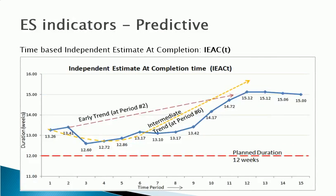One of the benefits of using ES is the ability to predict project completion time more accurately. We can calculate the time-based Independent Estimate at Completion, IEAC(T), which is a statistical estimate of total time for completing project work. In the diagram, an early trend line at the end of period 2 predicts a project duration of about 15 weeks, or a delay of about 3 weeks, while an intermediate trend curve drawn at period 6 projects a duration of about 16 weeks, or a delay of about 4 weeks compared to the planned duration of 12 weeks. The Independent Estimate for Completion Date, IECD, can be easily calculated by adding IEAC(T) to the project start date.